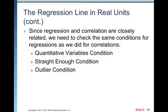The regression line and real units. Since regression and correlation are closely related, we need to check the same conditions for regressions as we did for correlations. So, once you check these conditions and they hold, you know that you can do linear regression and you know that the correlation is going to be something meaningful. So let's review what they are. Quantitative variables condition. Both variables have to be quantitative.